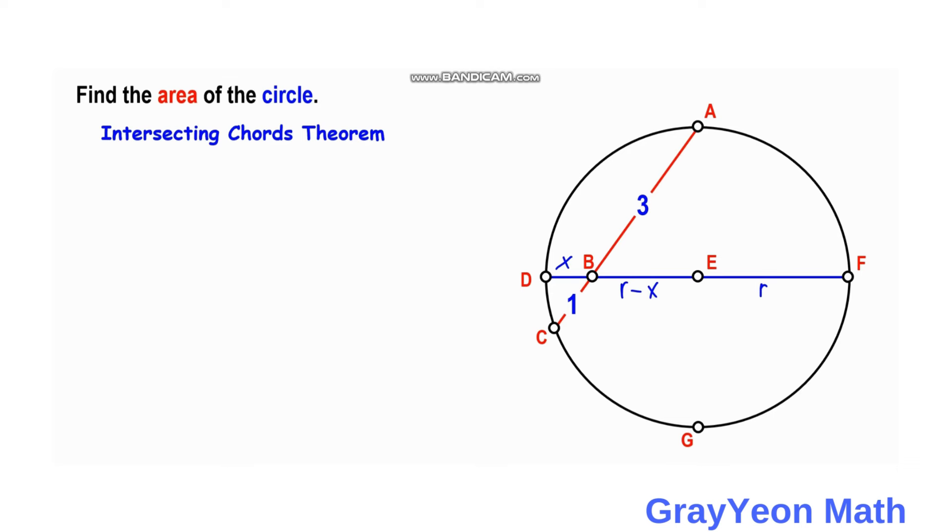By the intersecting chords theorem, the product of the segments for each chord at their point of intersection are equal. For chord AC we have AB times BC, and for chord DF we have DB times BF.